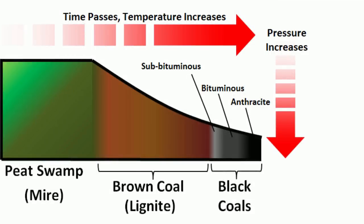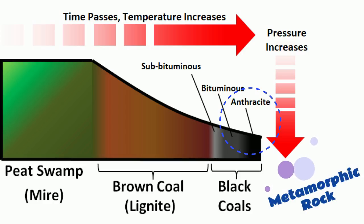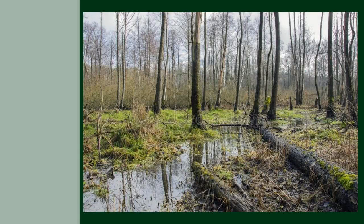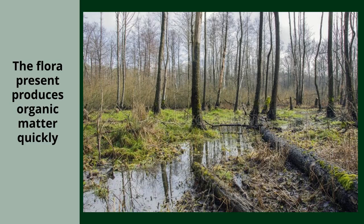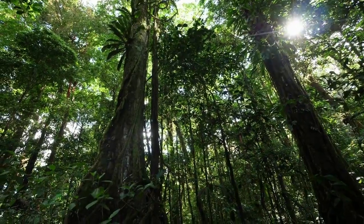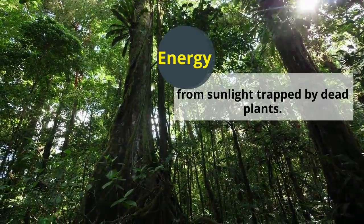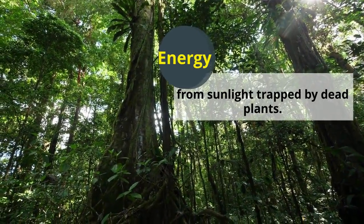The harder forms, such as anthracite coal, can be regarded as metamorphic rock because of later exposure to elevated temperature and pressure. The formation of coal begins in areas of swampy wetlands where groundwater is near or slightly above the topsoil. Because of this, the flora present produces organic matter quickly, faster than it can be decomposed. It is these layers of organic material that then form coal.